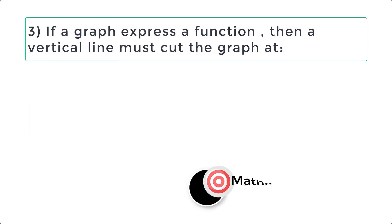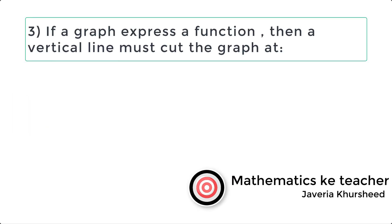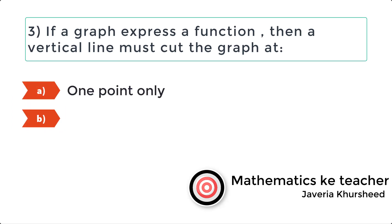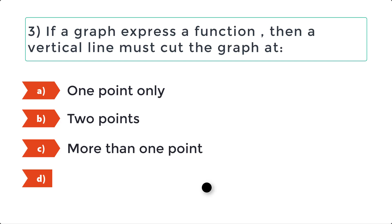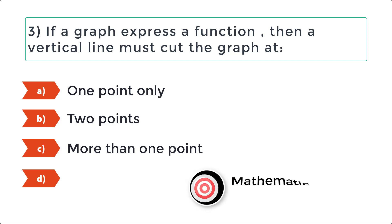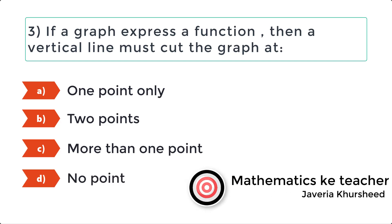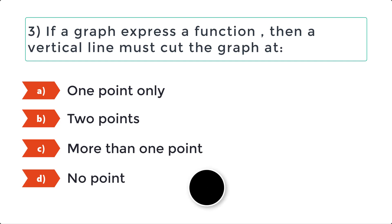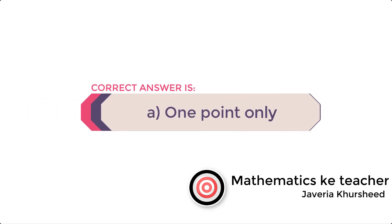Question 3. If a graph expresses a function, then a vertical line must cut the graph at: a) one point only, b) two points, c) more than one point, d) no point. Correct option is a) one point only.